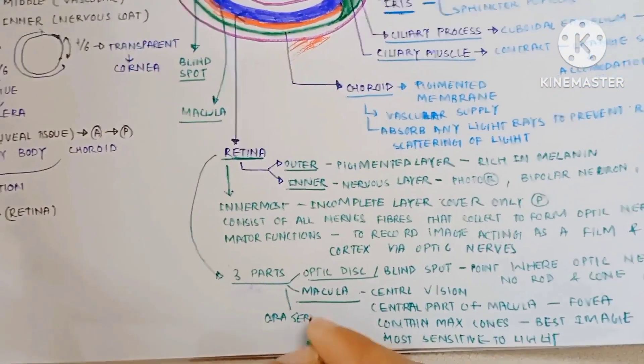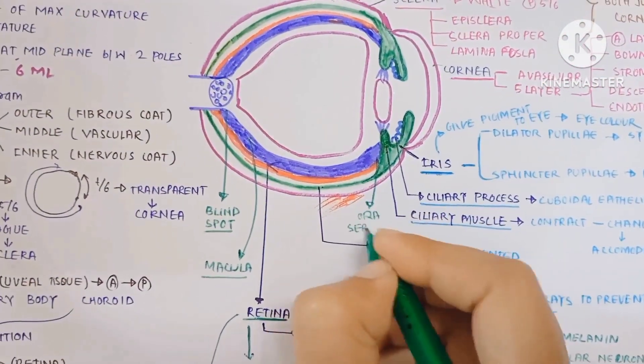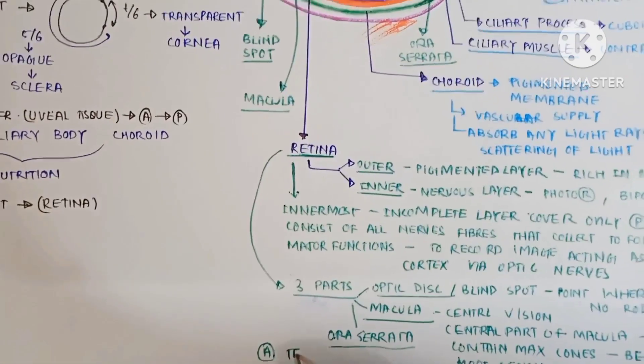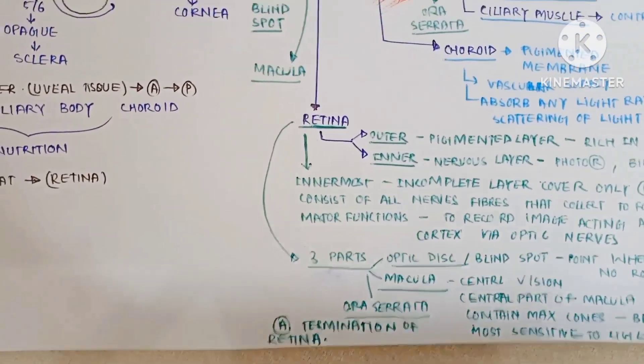The third part is the ora serrata. It is the site for intravitreal injection and is the anterior termination of the retina.